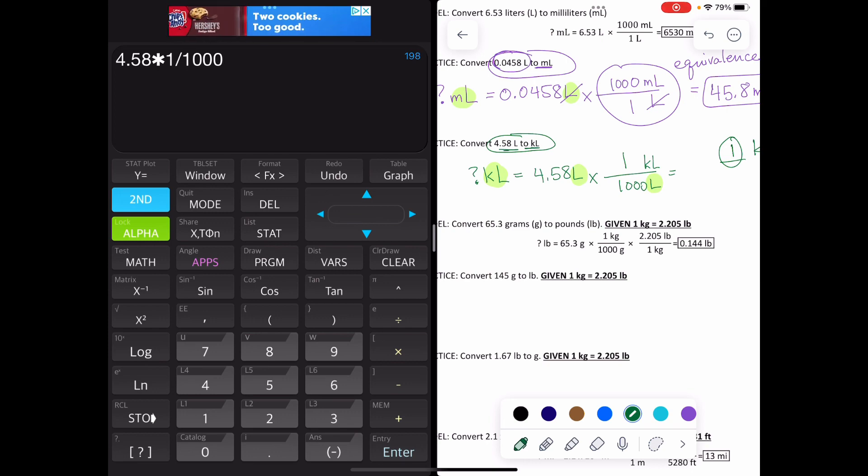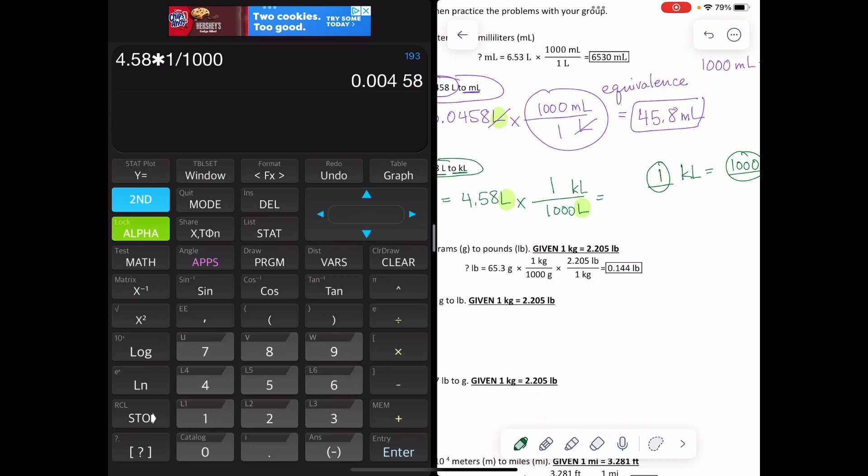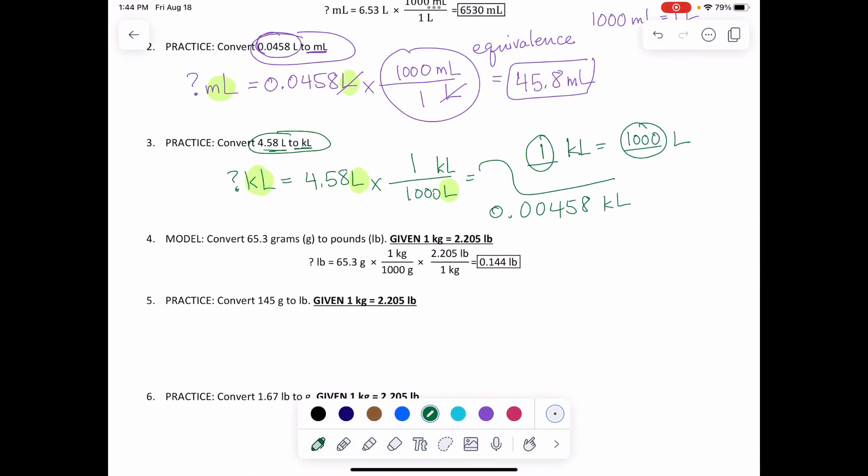I can just do it divided by a thousand. And then that gives me 0.00458 kiloliters. I could write that in scientific notation if I want to, although I don't have to.